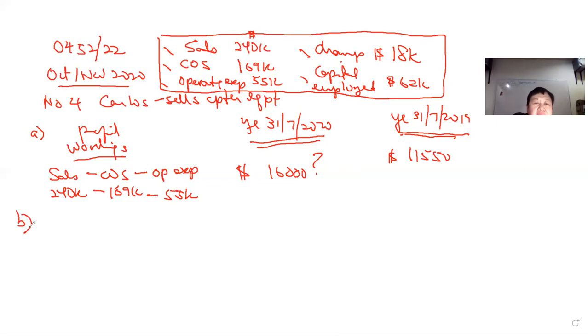So the profit for the year will be the sales less cost of sales, which actually arrives at the gross profit, and then you minus all the other operating expenses which you can't apportion off, for example wages, rent, insurance, etc., which will come up to finally a net figure of $16,000. So $16,000 this year compared to last year $11,550. So it looks like business is pretty good.